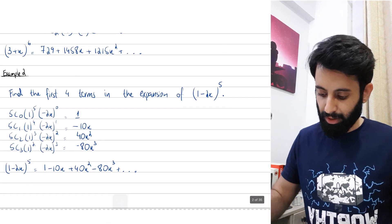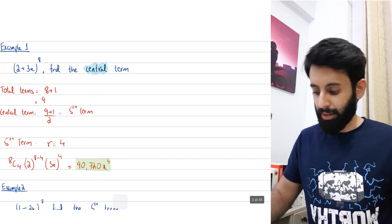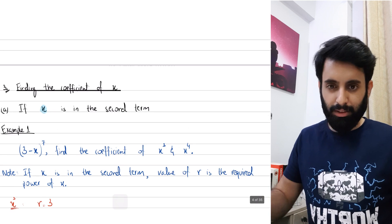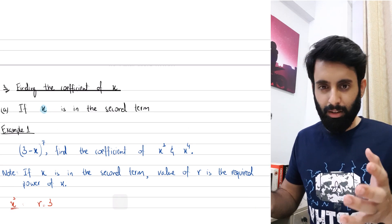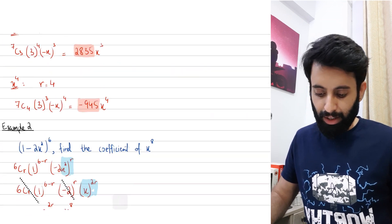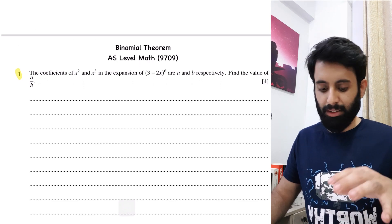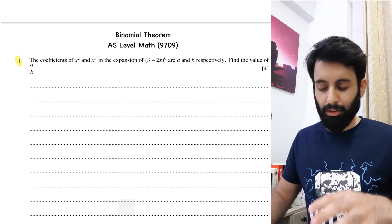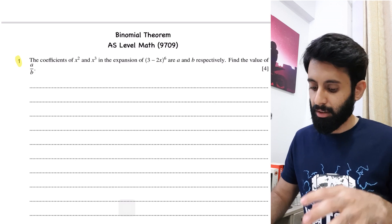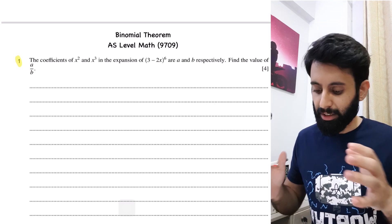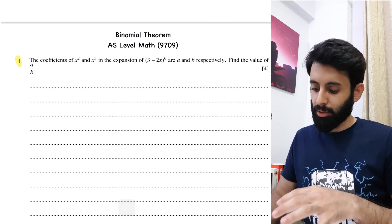I've divided the topic concept-wise: when you have to find a certain term, when you have to find the coefficient of x when x is in the second term, when x is in both terms, or how to work with expansion of n. After all that, I have a decent amount of topical past papers of binomial theorem — I've extracted and compiled the questions and color-coded them also.